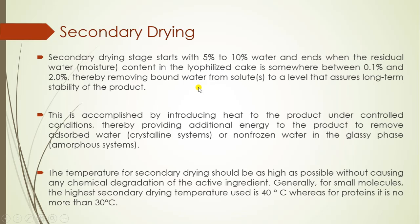Secondary drying starts with 5 to 10 percent water and ends when residual moisture contained in the lyophilized cake is around 0.1 to 2 percent, thereby removing bound water from the solute to a level that assures long-term stability of the product. This can be done by introducing heat to the product under controlled conditions, providing additional energy to remove adsorbed water in crystalline systems and unfrozen or bound water in the glassy phase, that is, in amorphous systems.